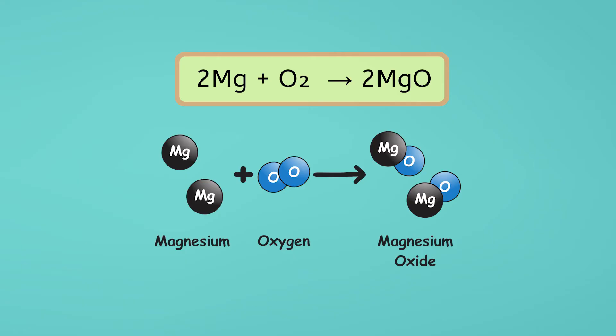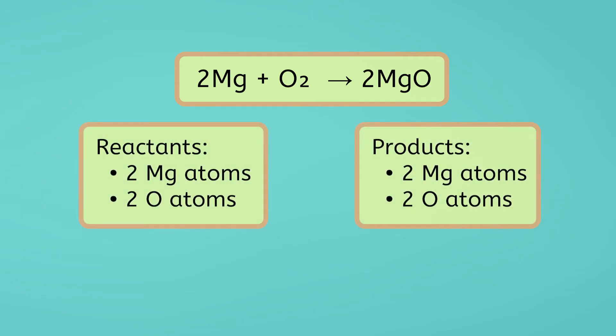The 2 in front of the MgO means we have two magnesium oxide compounds. So each atom in the formula is multiplied by 2, which means we have two magnesium atoms and two oxygen atoms. This means that we have two magnesium atoms and two oxygen atoms in our reactants and two magnesium oxide compounds, which gives us two magnesium atoms and two oxygen atoms in our products. Now our reaction meets the law of conservation of mass. This is called a balanced equation.